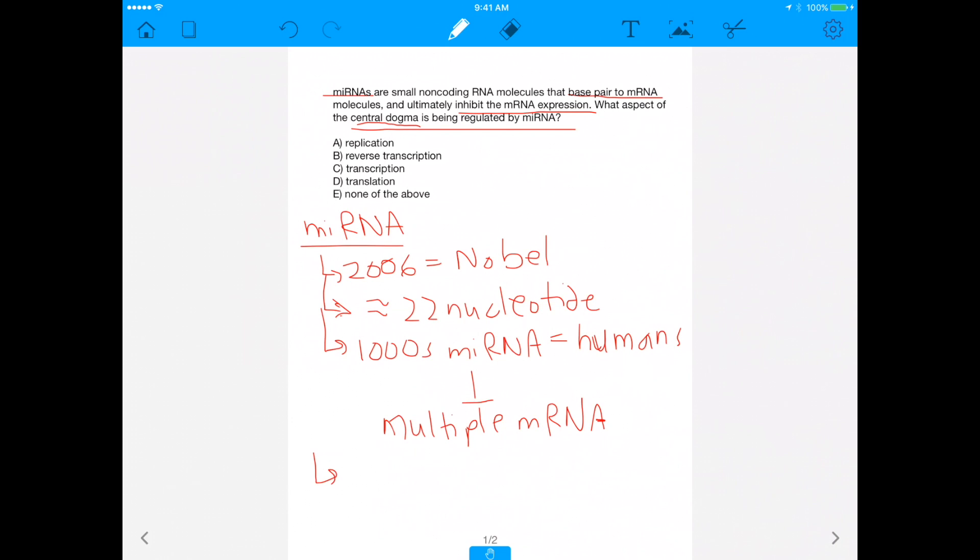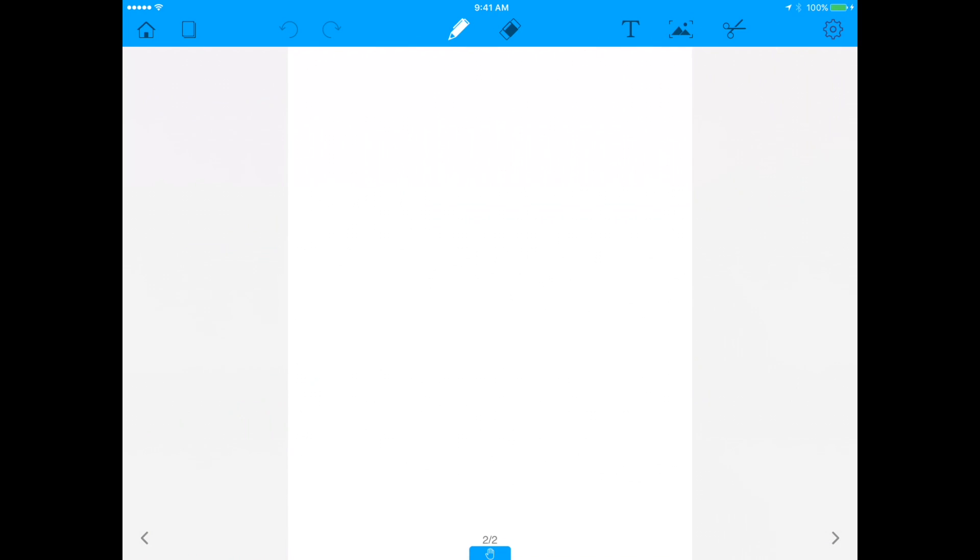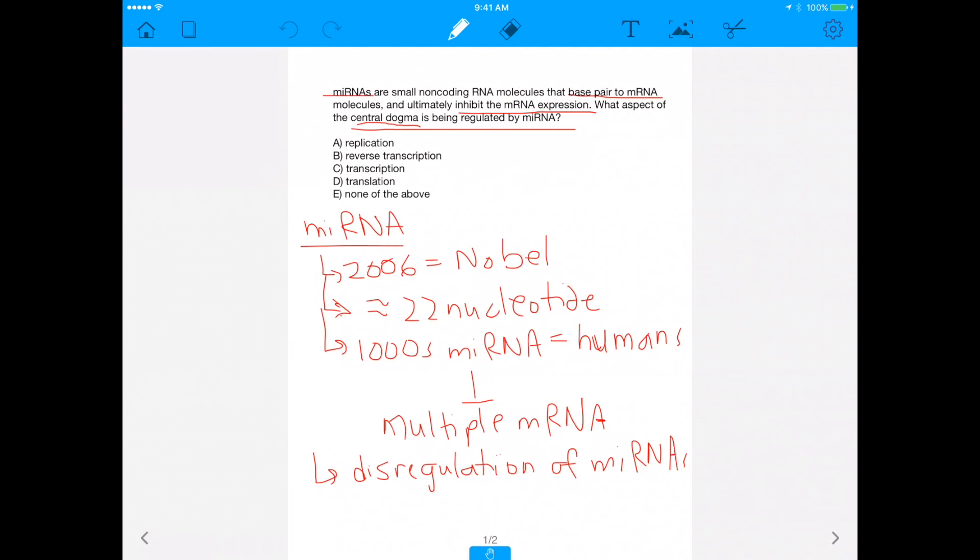With that being said, if you don't have microRNAs, you can actually get diseases. The dysregulation of microRNAs leads to disease. And some of these diseases actually include things like lymphoma. So I want you to know that these microRNAs do exist in you, and they do have a critical function. With that being said, let's approach this question now.